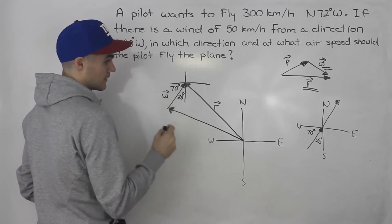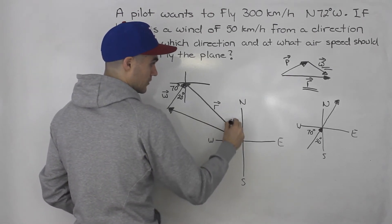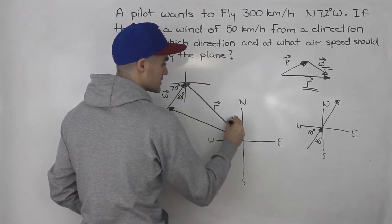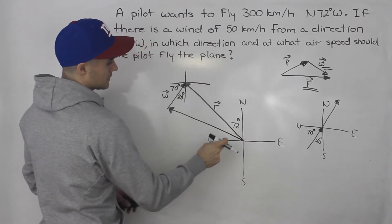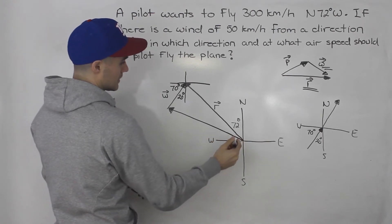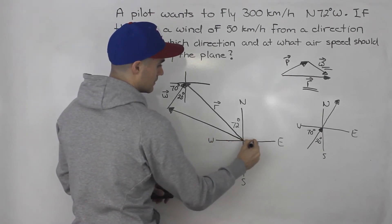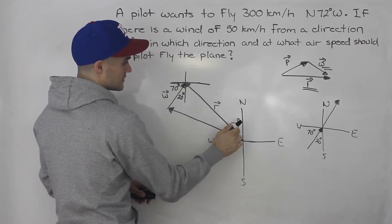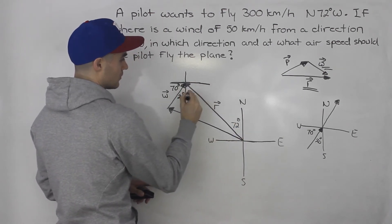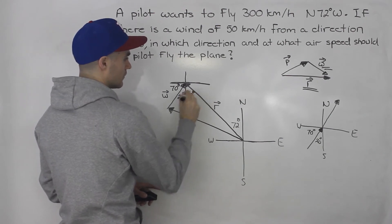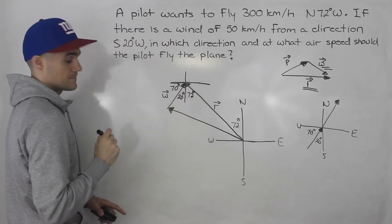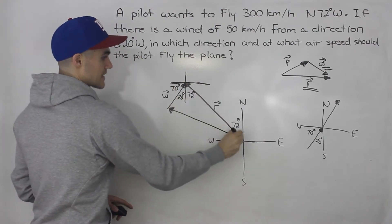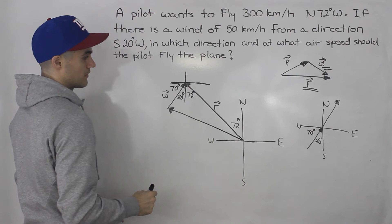A couple of things here. I didn't label the angle — the resultant is north 72 degrees west, so this is 72 degrees here. Notice that we can use the Z pattern, because this line and this line are parallel. There's a line going through it, so this angle and this angle have to be equal because of the Z pattern.